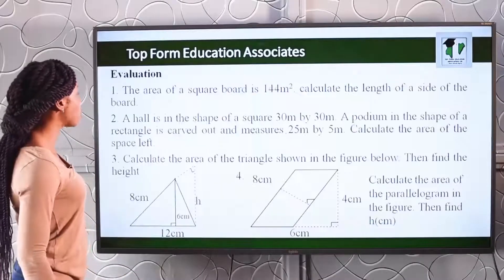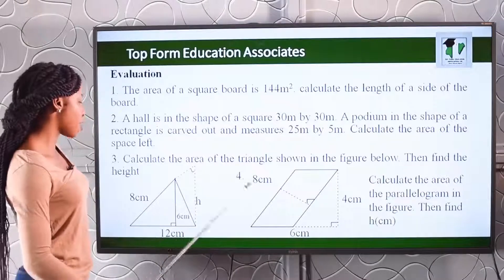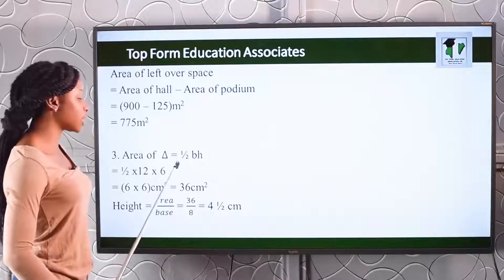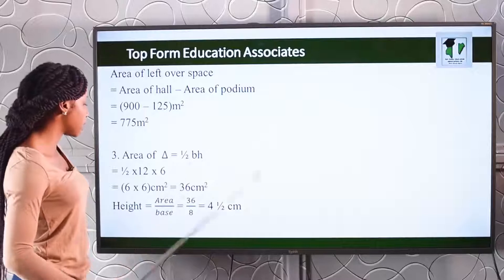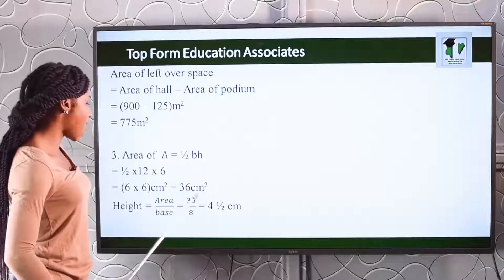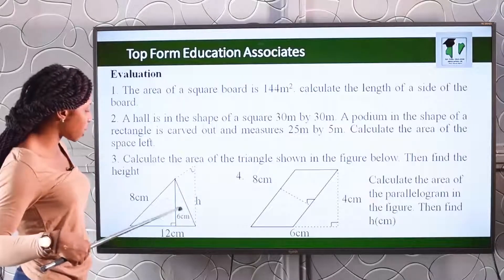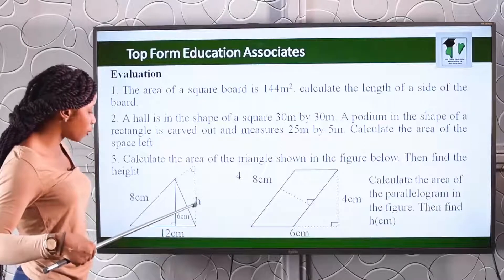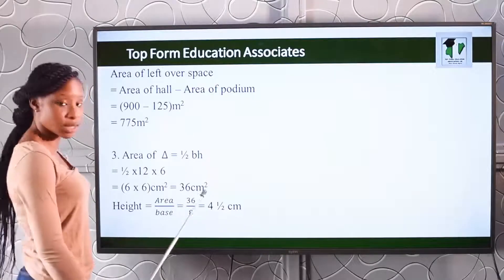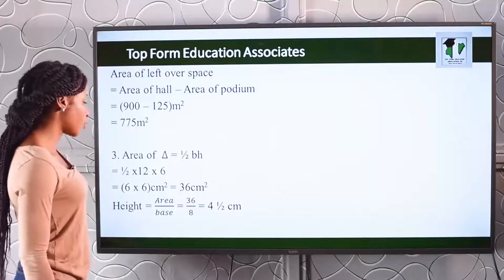Number three: the area of a triangle is half base times height, with base 12 and height 6, giving an area of 36 centimeters squared. For the second triangle in the figure, we're asked to find the height. Using the formula height equals area over base: 36 divided by 8 gives a height of 4 and a half centimeters.